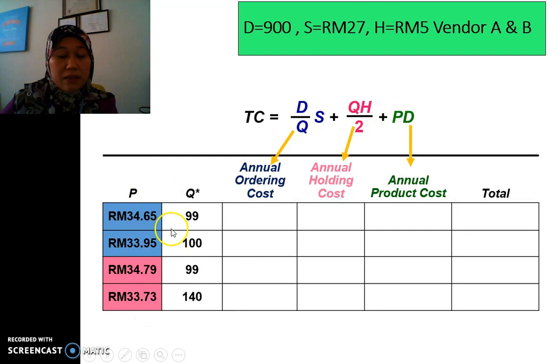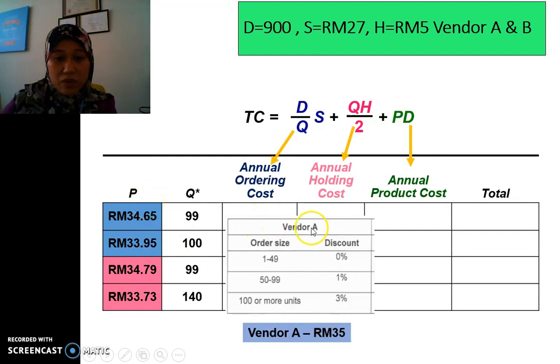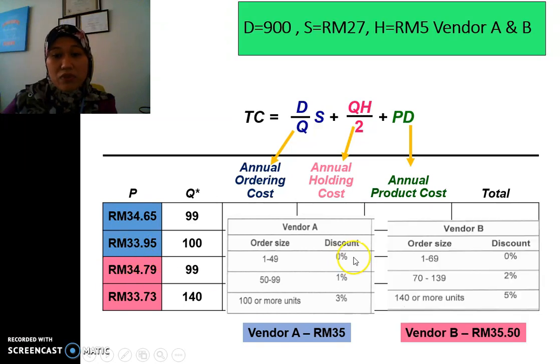These are the price that has been discounted. Remember, vendor A, the price is 35. So now the valid price is starting from here. So 1% of 35 is RM34.65. And then the 3% off of 35, we have RM33.95. And we do the same thing for vendor B. The first one is not valid. So we start with the second one is 2% off 35.50. So we have RM34.79. And we do that for the 5% off of 35.50. We got RM33.73.